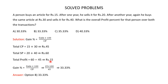Total profit is 60 minus 45, which is Rs 15. Total cost price is Rs 45. Substituting in the formula, gain percent equals 15 multiplied by 100 divided by 45, which gives 33.33 percent. So the correct answer is option B, 33.33 percent.